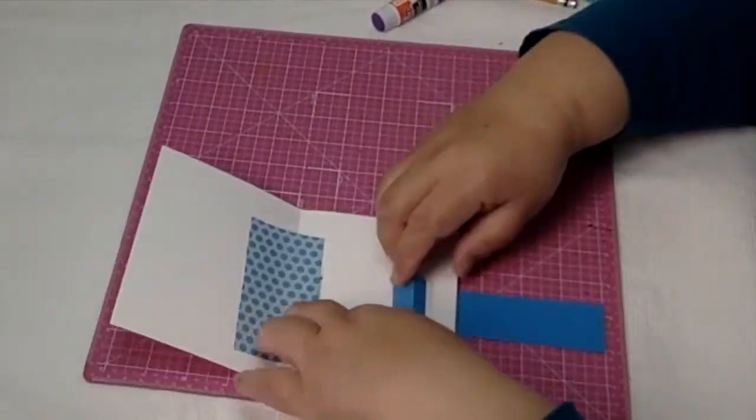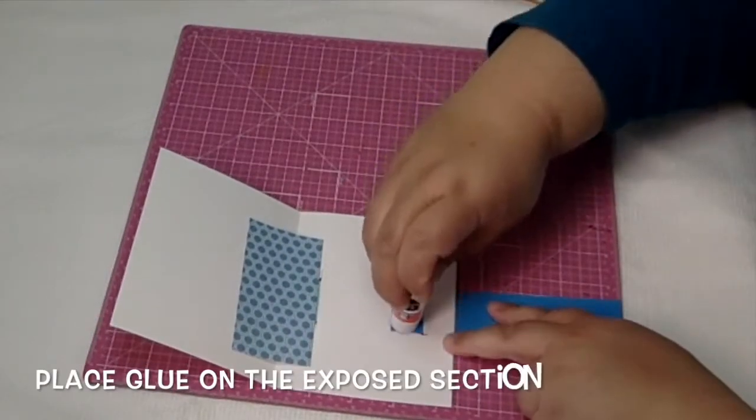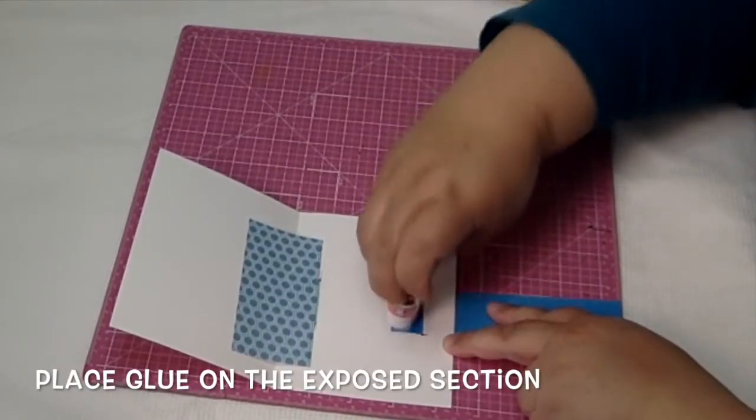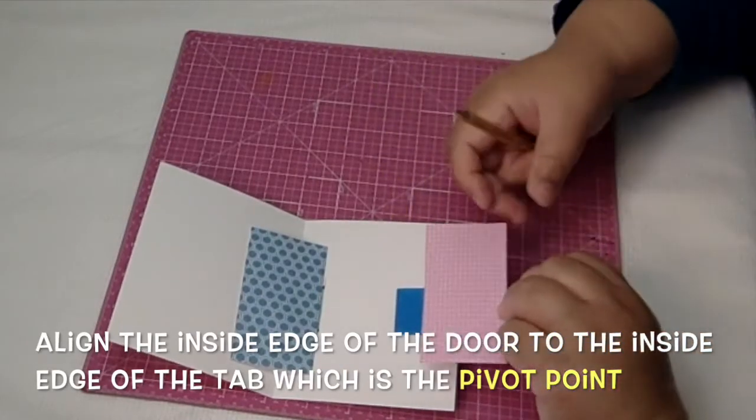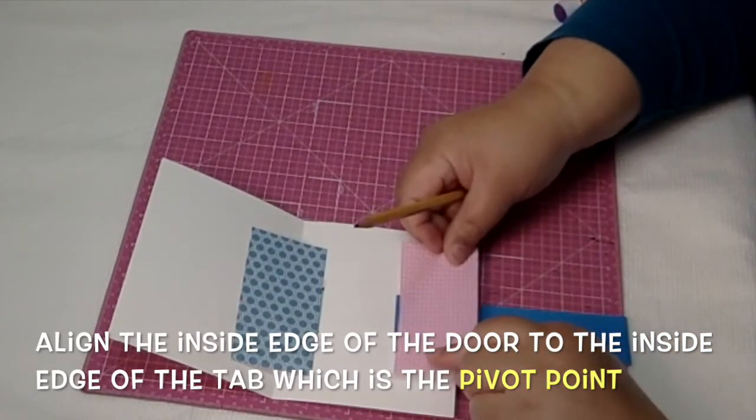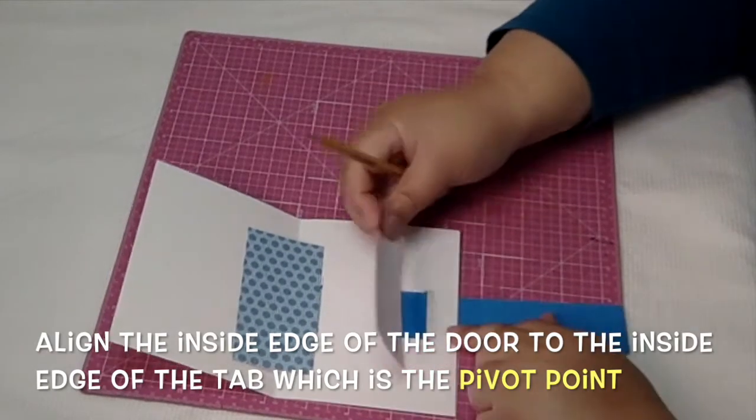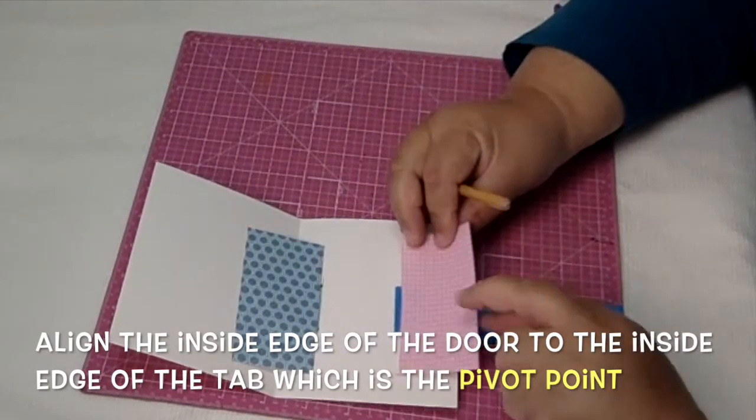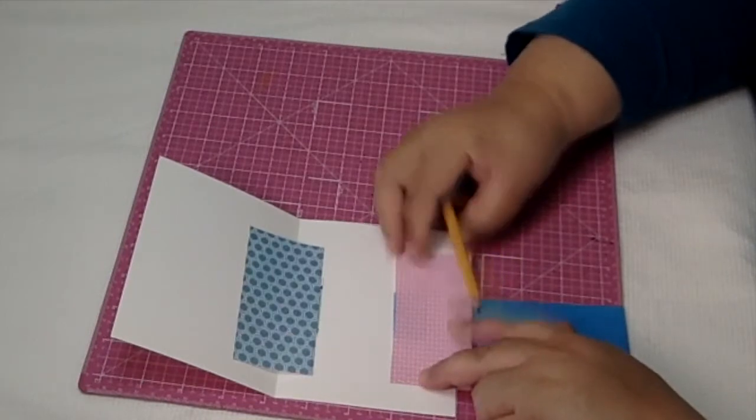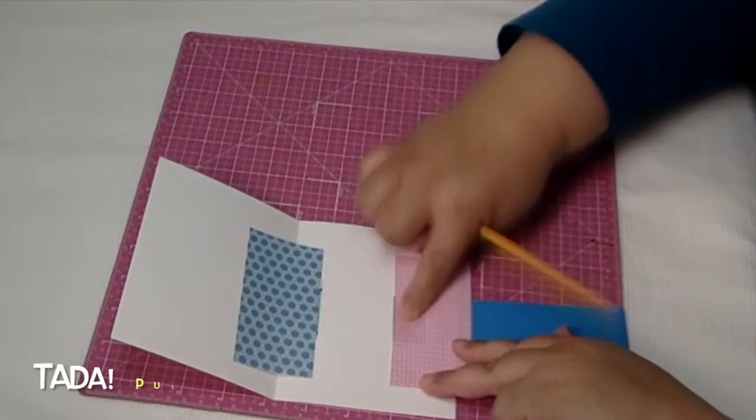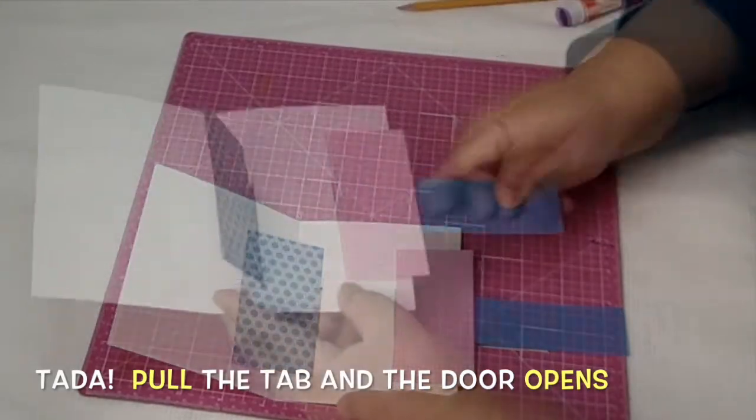Okay, so just put some glue on that exposed part there. This is now the new pivot point. Just place your door's edge on that pivot point like this to glue it on. Now when you pull on the tab, the door opens just like the other one, except in the opposite direction.